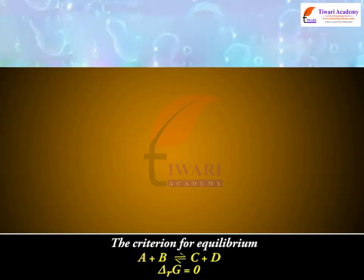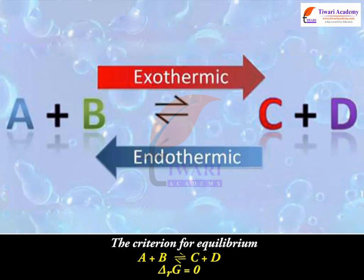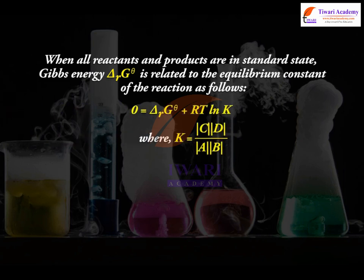So, the criterion for equilibrium A + B ⇌ C + D is ΔrG = 0. When all reactants and products are in standard state, Gibbs energy ΔrGθ is related to the equilibrium constant of the reaction as follows: 0 = ΔrGθ + RT ln K, where K = [C][D] / [A][B].